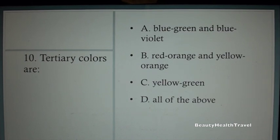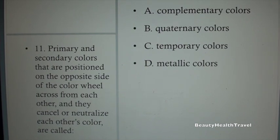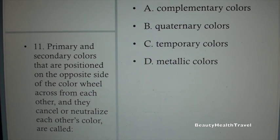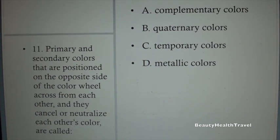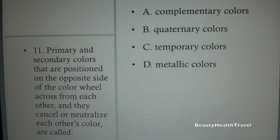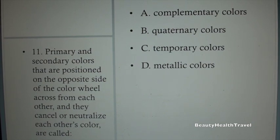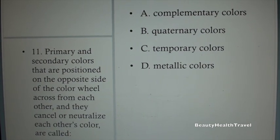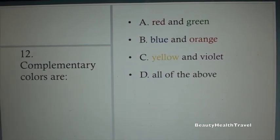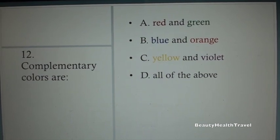Questions 10-11: Primary and secondary colors that are positioned on the opposite side of the color wheel across from each other, and they cancel or neutralize each other's color, are called: A. Complementary colors, B. Quaternary colors, C. Temporary colors, D. Metallic colors.